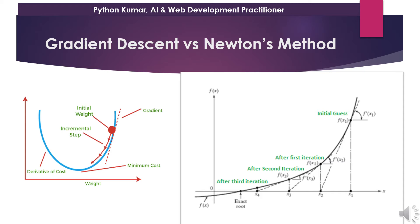In Newton's method, the tangent is much more useful. You start with a point on the curve, draw a tangent at that point, then extend the tangent so that it meets the x-axis. From the x-axis you go back up and meet the curve — that becomes your second point. Newton's method is much faster than gradient descent in converging.